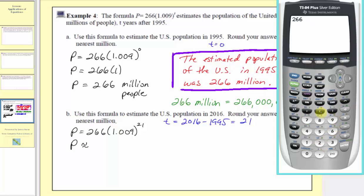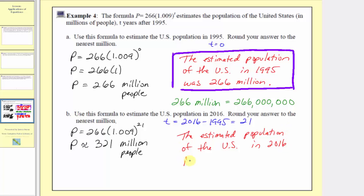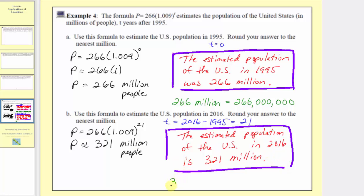We enter 266 times 1.009 to the power of 21 into the calculator. Since p is in millions, rounding to the one's place gives us the nearest million. We round this to 321, so p is approximately 321, representing a population of 321 million people. The estimated population of the US in 2016 is 321 million, or in decimal notation, 321,000,000.